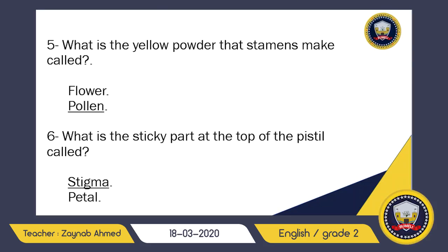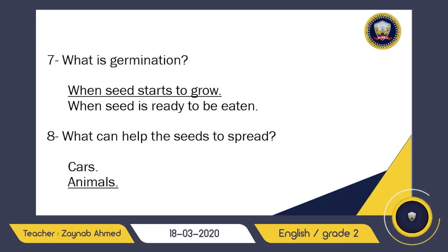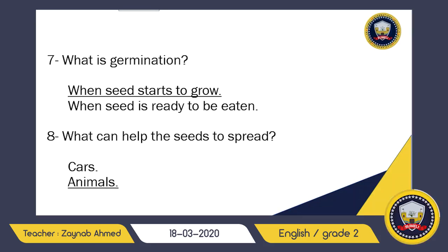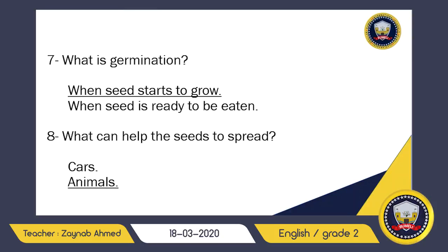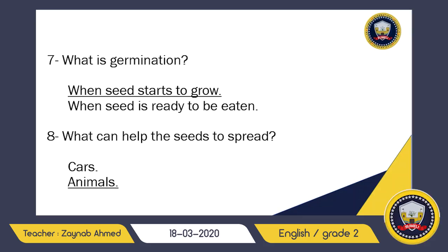Question number seven: what is germination? This is very easy. Germination is when a seed starts to grow — not when a seed is ready to be eaten. When the shoot starts coming out, it is called germination.